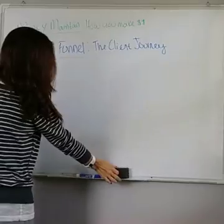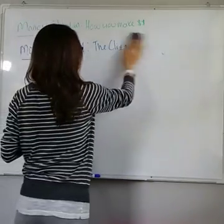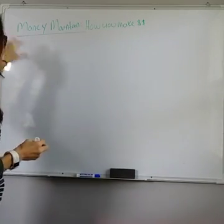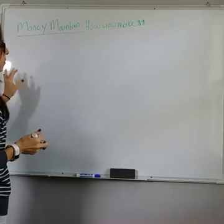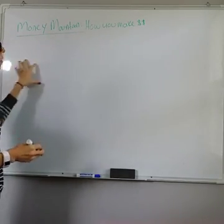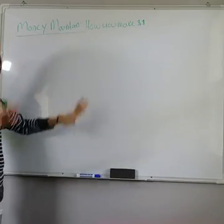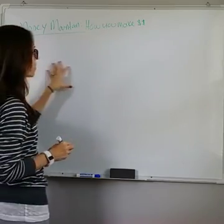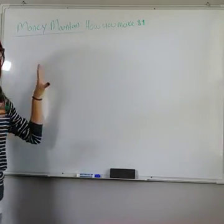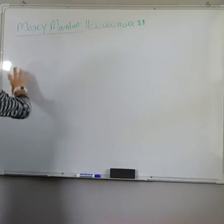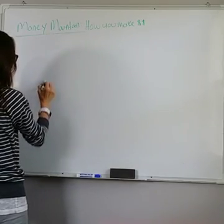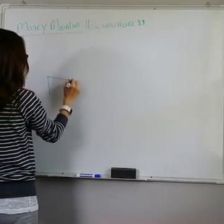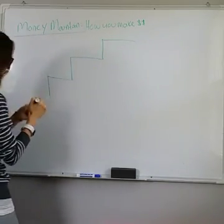Let's talk about what your money mountain might look like. The money mountain is how you're going to make money — this is how you will bring people onto your list, into your community, and then how you will continue to create income through leverage, automation, and scaling your business. This is also where you're going to create a funnel or mountain that starts where your clients are at and then brings them through where they need to go. The mountain kind of goes up.